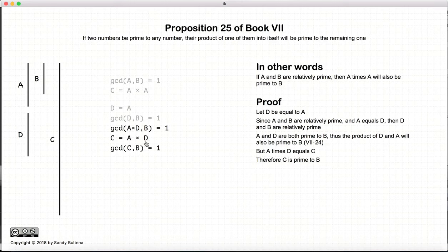So if c equals a times d, then c and b are also relatively prime. So there we have shown a and b are relatively prime, c is essentially a squared, and c and b are also relatively prime.